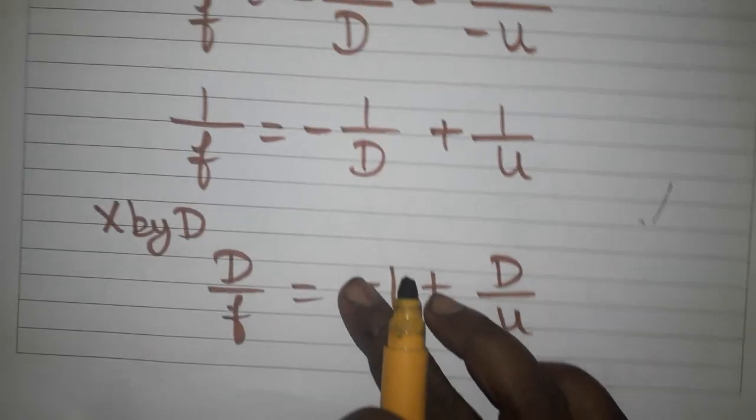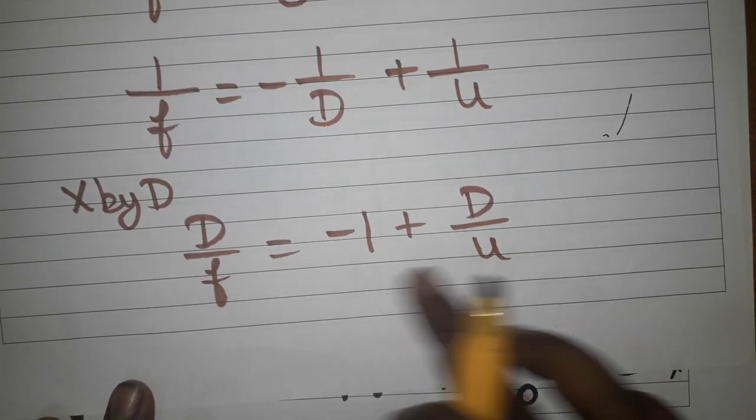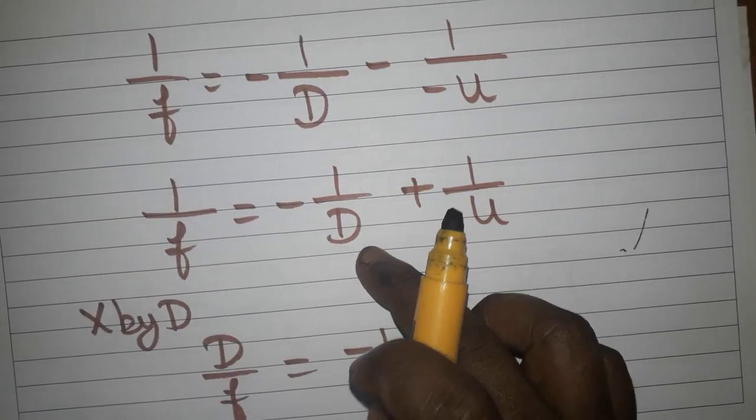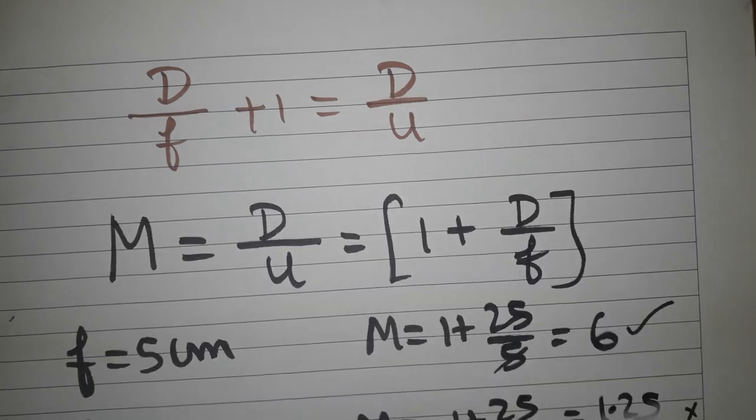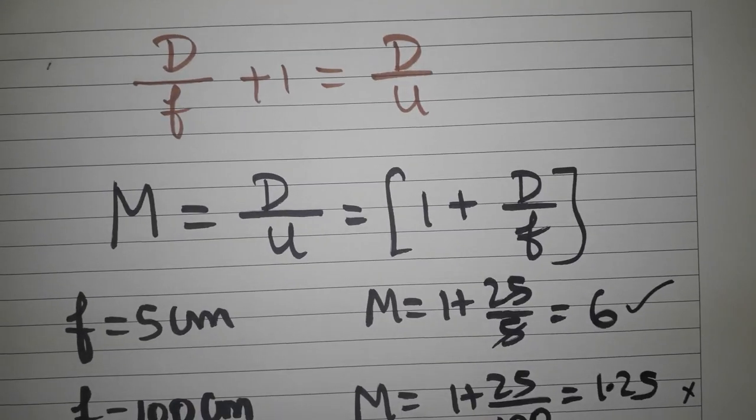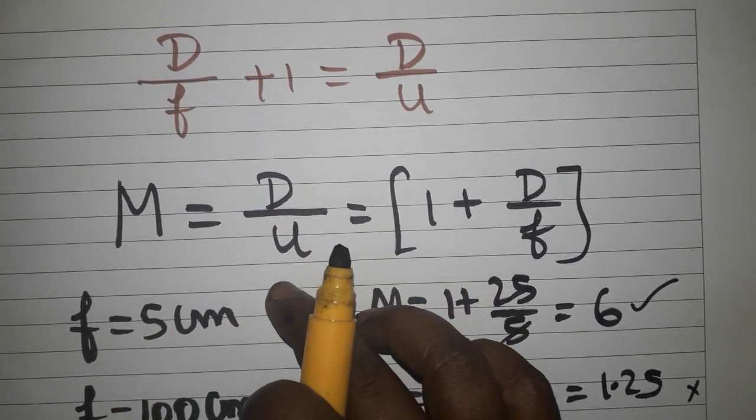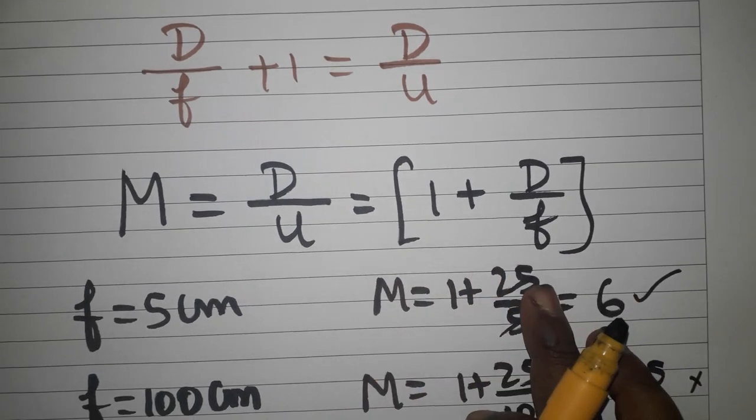Multiplying with D, the whole is multiplied with D. D by f, D by D will become 1. D by u will become like this. Minus 1 if you bring this side, will become plus 1. So M is equal to D divided by u. We know this formula.